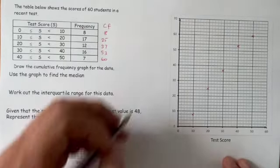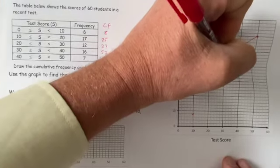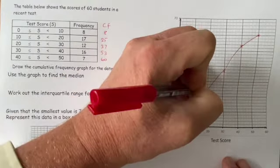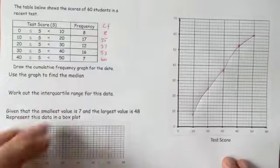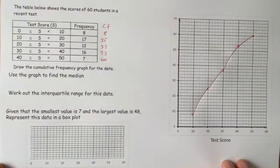And for 50 and less, we had all 60 people. And if I draw a curve through those points, that is our cumulative frequency curve.